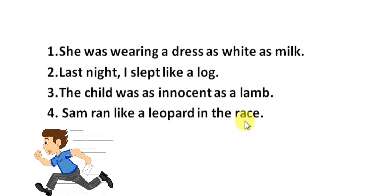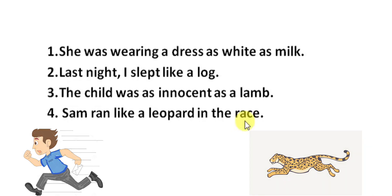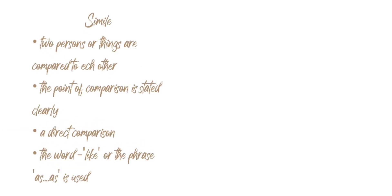Number 4: 'Sam ran like a leopard in the race.' A leopard is an animal which runs the fastest amongst all the animals. Sam also ran very fast, thus he is compared to a leopard because of his speed. So, we see in simile, two persons or things are compared to each other and the point of comparison is stated clearly. It's a direct comparison with the word 'like' or the phrase 'as...as.'